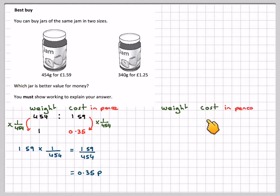So here I've got weight and cost in pence for the second one, same idea: 340 grams, 125 pence. Here I want to know what 1 gram weighs. So how do I go from 340 to 1? I need to multiply by 1 over 340.